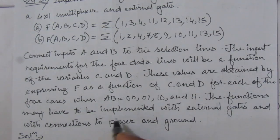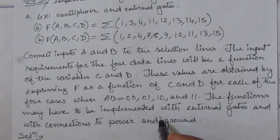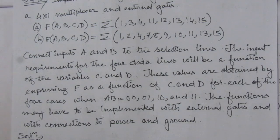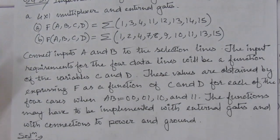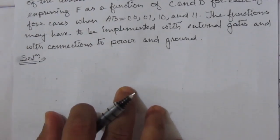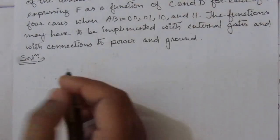The functions may have to be implemented with external gates with connections to power and ground, where power means 1 value and ground means 0. Now let us realize these functions. First of all, let us make the truth table and from that we will find out the input and output relationship.